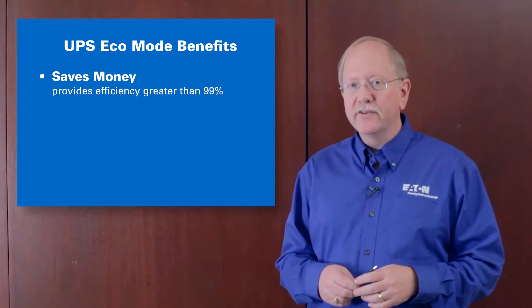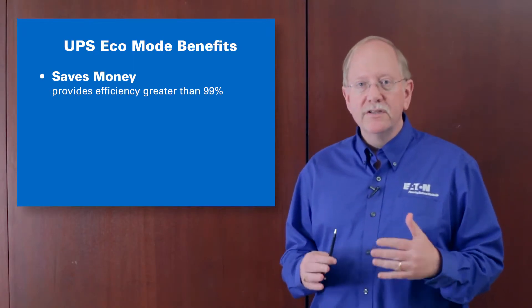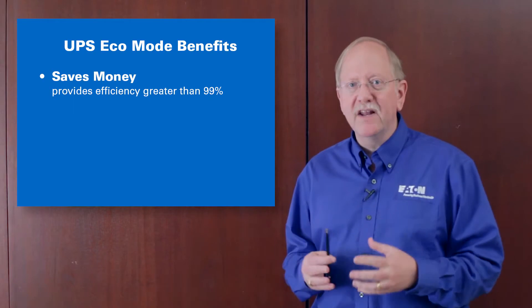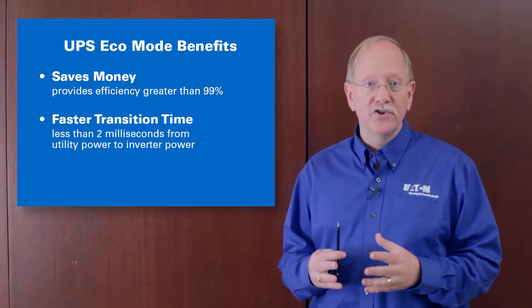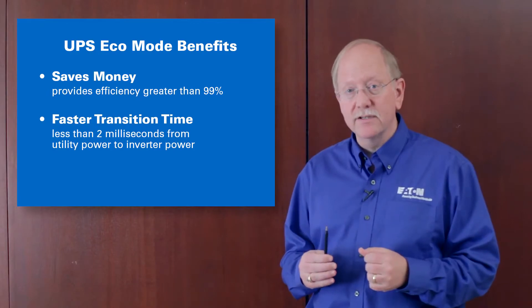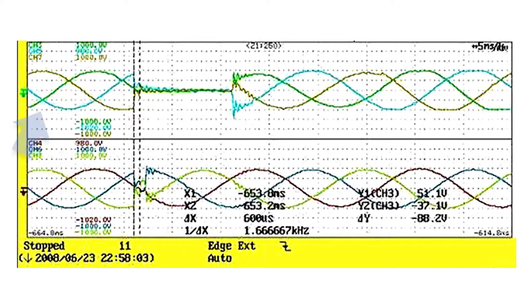By far the biggest concern with eco mode UPS operation is the observer has trouble accepting that we can in fact transition from static switch operation to double conversion operation in less than two milliseconds. So we use an oscilloscope trace as proof.